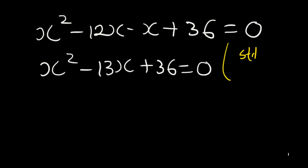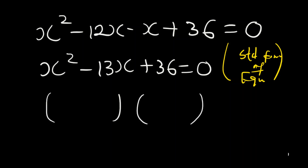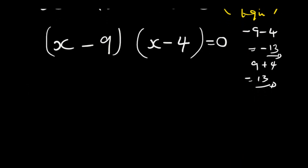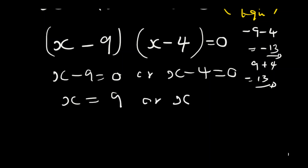We can now factorize. Find factors of 36 that add to give the middle term of 13: those are 9 and 4 (since 9 + 4 = 13). Because the middle term is negative, both signs are negative: (x − 9)(x − 4) = 0. So x = 9 or x = 4.